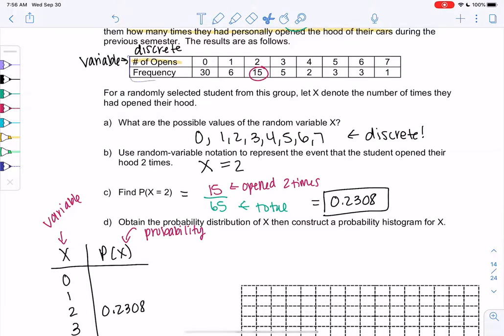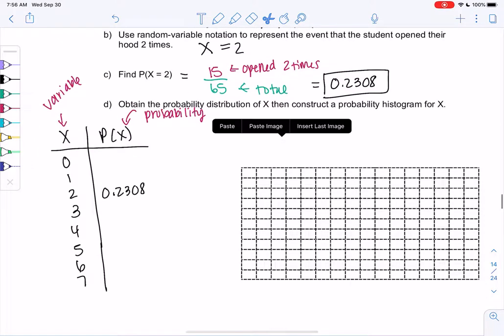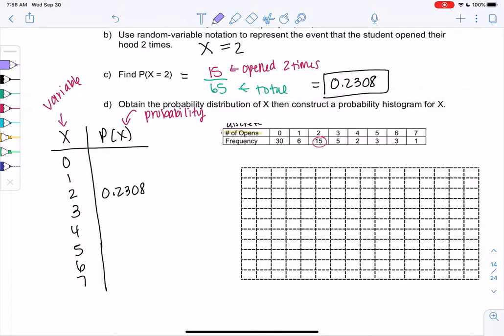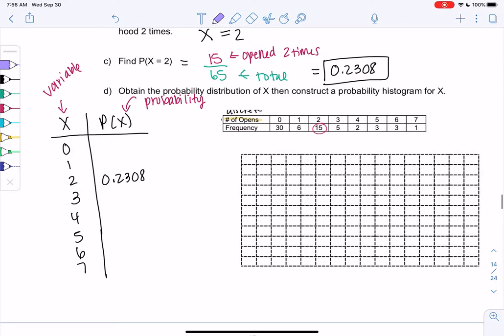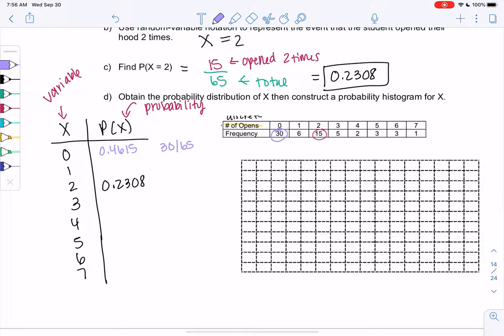So let's go ahead and figure this out. So I'm just going to move the table a little bit closer so we can watch it. So we're just going to find all the probabilities now. So all of them, we're just going to do frequency divided by total. So for 0, it will be 30 over 65. 0.4615. All right. So then for 1, right, we do 6 out of 65. This should feel familiar. We're giving it a new name, but we did this when we did relative frequency. 0.0923. 2, we already did. That was 15 out of 65. And we'll just keep going.